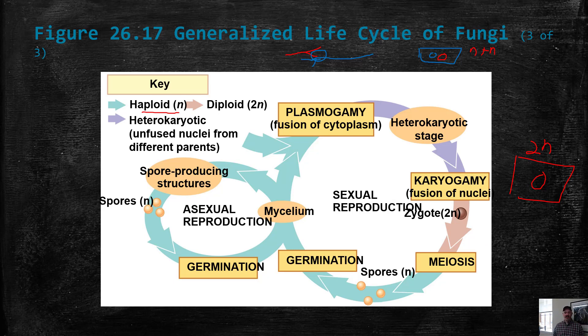Meanwhile, asexually, a haploid cell produces spores by mitosis, and they grow into basically clones of the parent in the case of asexual reproduction.